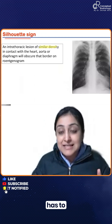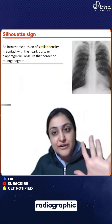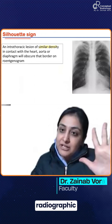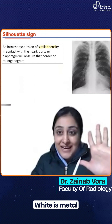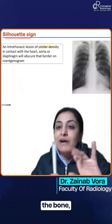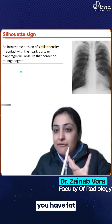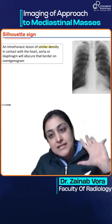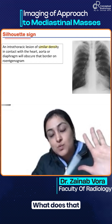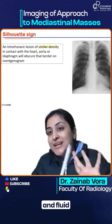You need to know the five radiographic densities: metal (white), then bone, then soft tissue, then fat, and then air. These are the only five densities. What this means is that soft tissue and fluid have the same density.